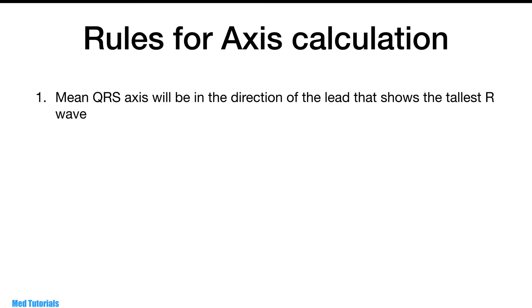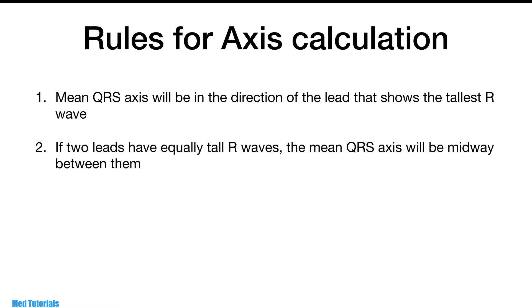We will now look into the rules we need to apply to determine the axis of the heart. First, the mean QRS will be in the direction of the lead that shows the tallest R wave. Second, if two leads have equally tall R waves, the mean QRS will be midway between them. So if you find two leads in a tie for having the tallest R waves, the mean axis is midway between the leads.